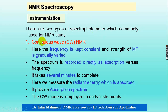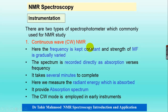The first one is called continuous wave NMR. In continuous wave, we keep the frequency constant and the strength of the magnetic field is gradually varied. So, the magnetic field is varied and frequency is kept constant in the continuous wave spectrophotometer.